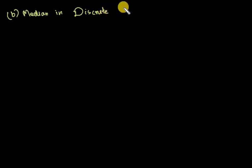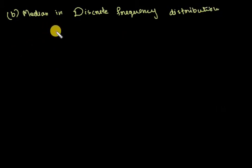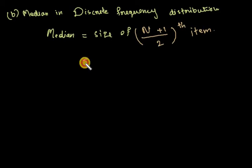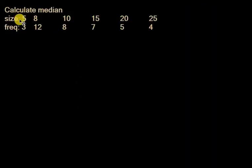The next case is median in discrete frequency distribution. The formula is: median equals the size of the (N+1)/2th item, where capital N equals the sum of all given frequencies, that is, sigma f. Now let's draw a table and solve the problem. Size is given and frequency is given.